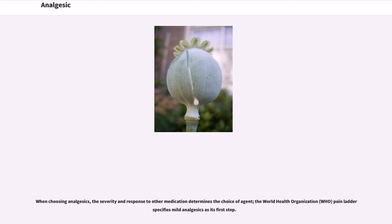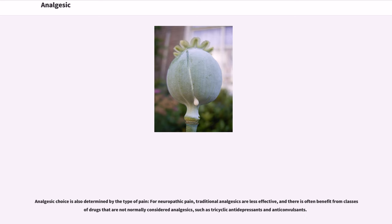When choosing analgesics, the severity and response to other medication determines the choice of agent. The World Health Organization pain ladder specifies mild analgesics as its first step. Analgesic choice is also determined by the type of pain. For neuropathic pain, traditional analgesics are less effective, and there is often benefit from classes of drugs not normally considered analgesics, such as tricyclic antidepressants and anticonvulsants.